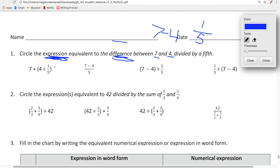It's not this one because we know difference means subtraction. So it's not this one because this has addition. So seven plus four divided by one fifth is not right.